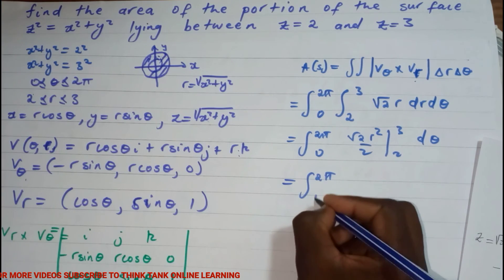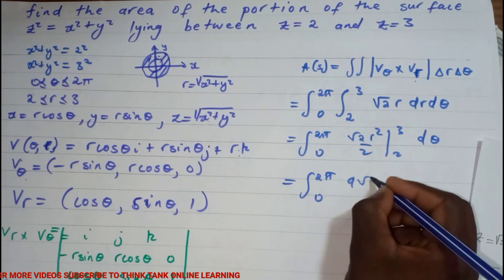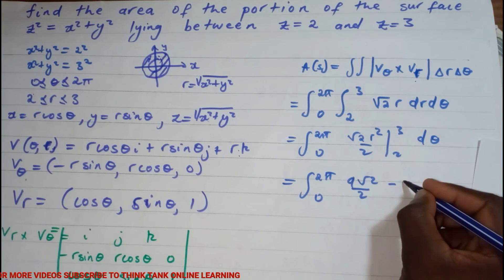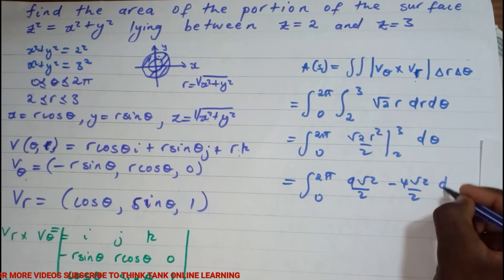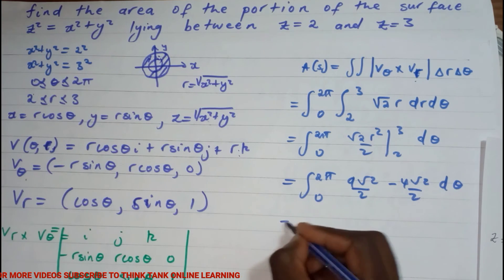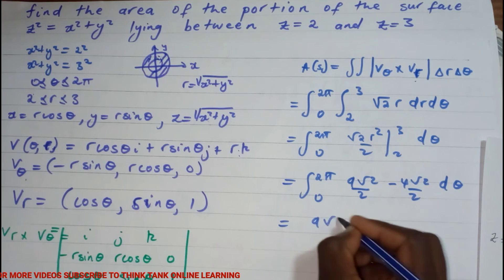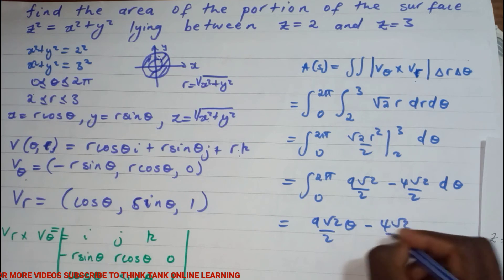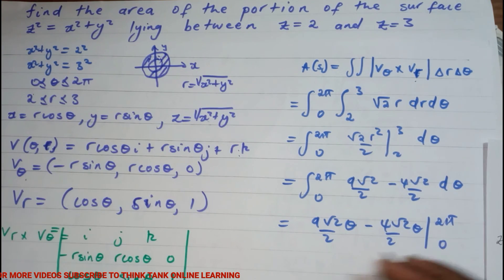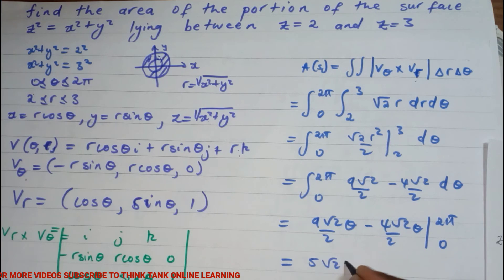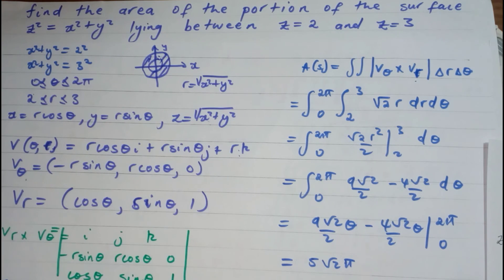Integrating with respect to r first: √2 · r²/2 evaluated from 2 to 3 gives 9√2/2 − 4√2/2. Then integrating with respect to θ from 0 to 2π: (9√2/2 − 4√2/2)·θ evaluated gives (5√2/2)·2π = 5√2·π. This is the same answer obtained using the first method — 5√2·2π — confirming both methods agree. Thanks for watching!